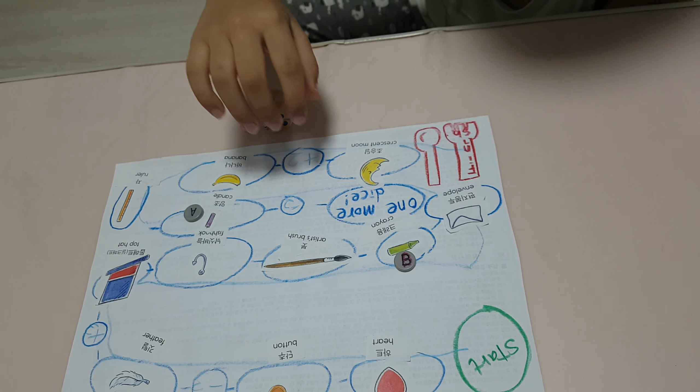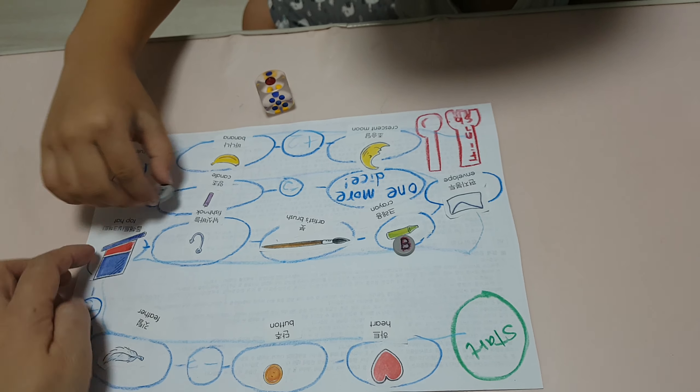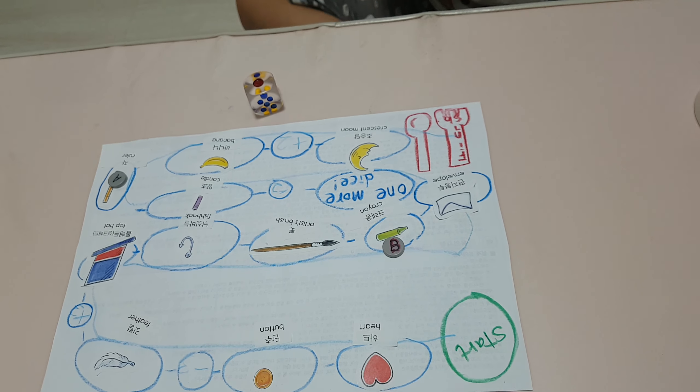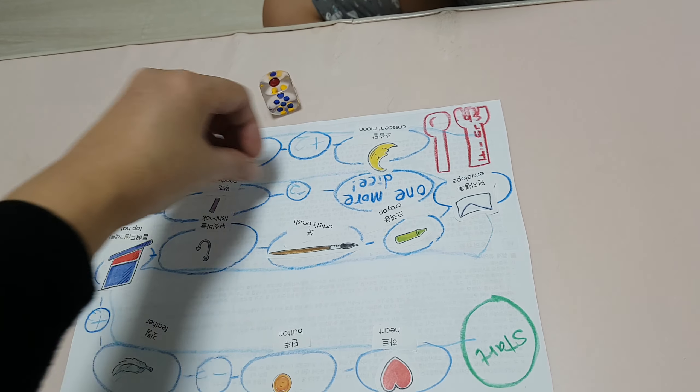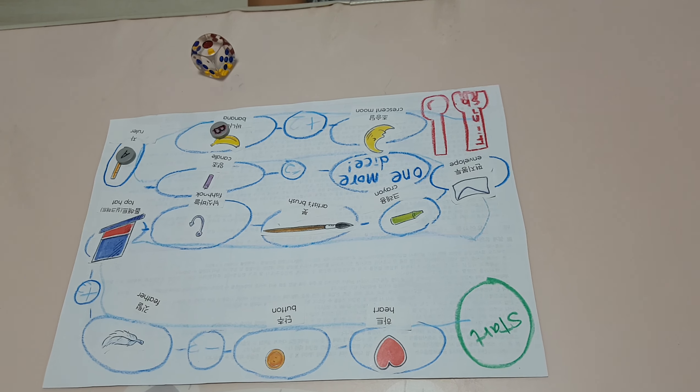Oh, one. This one. One. Ruler. One, two, three, four, five, six. Banana. You can go, oh.